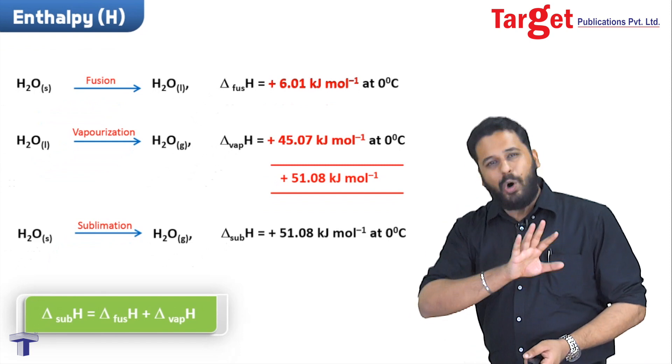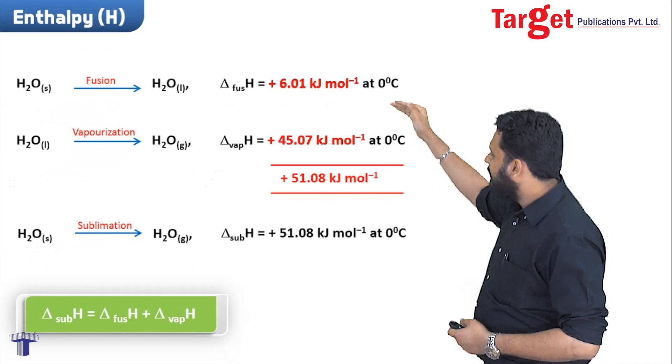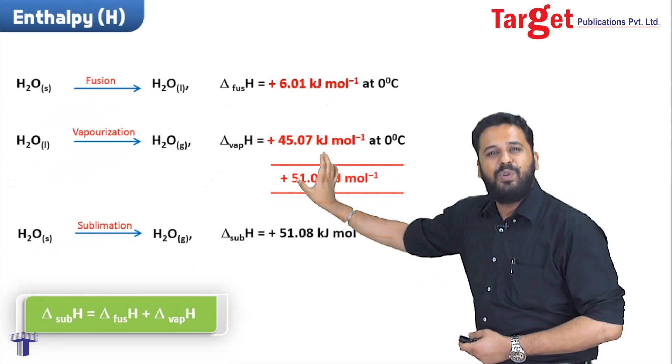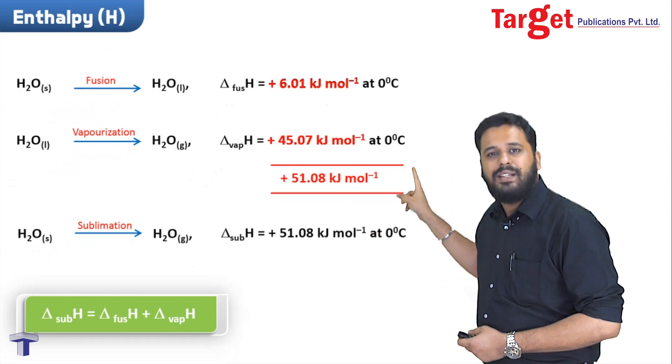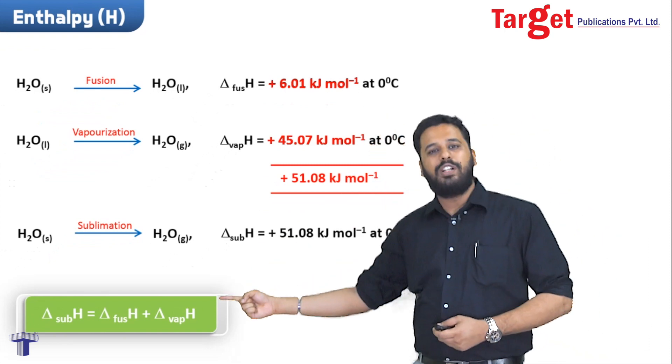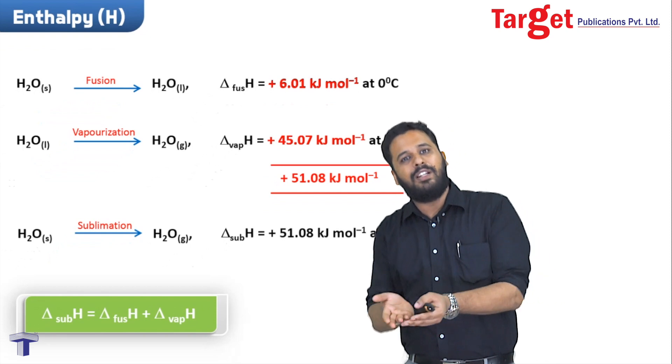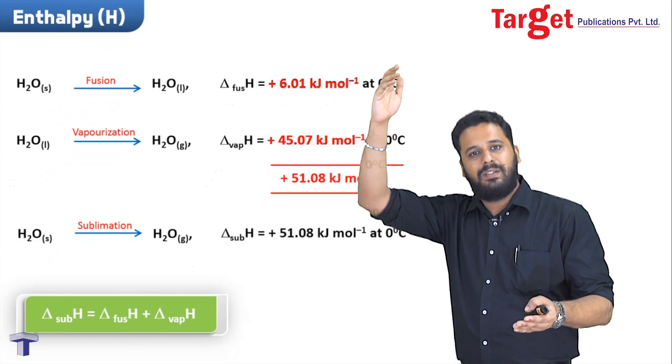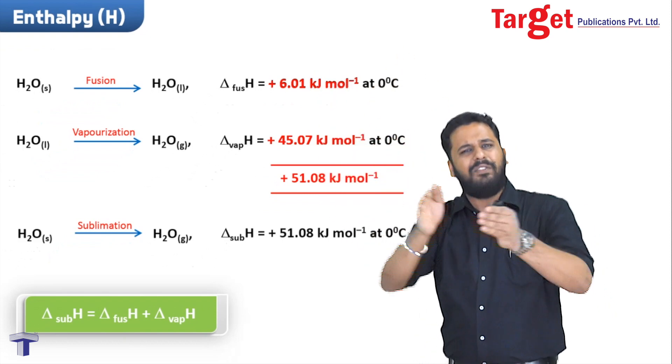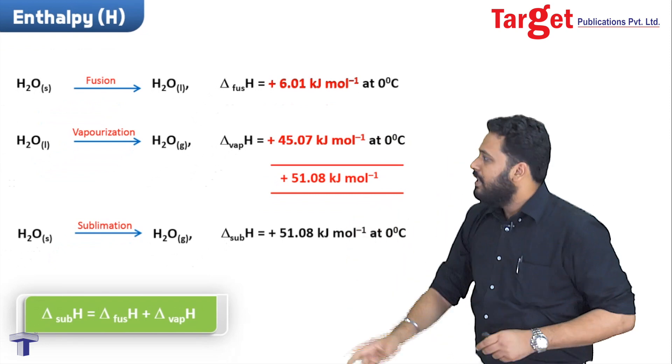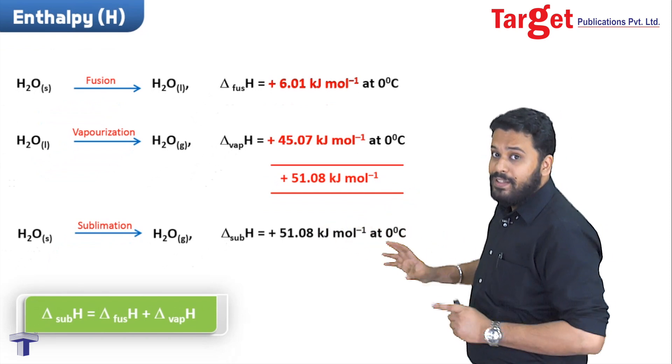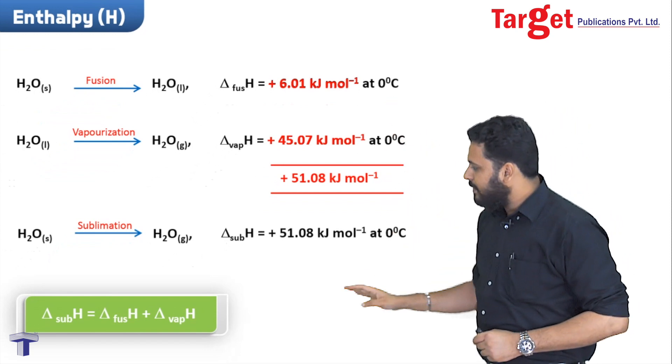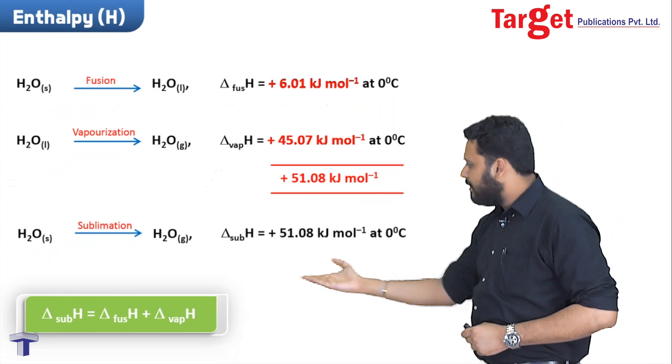The numericals on this are very easy. There are some equations - you make changes in them, reverse them, multiply by factors, and finally just add them to get the given equation. We just have to get the final equation by making all sorts of changes in the given equations. The only catch is that whatever changes we make in the equation, we have to make the same changes in delta H.